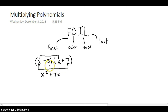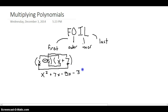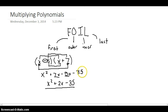Next we multiply the inner terms — and don't forget the negative — so it's negative 5X. Then the last terms give us negative 35. Combining like terms, we get X squared plus 2X minus 35, and that's the final answer using the FOIL method to multiply two binomials.